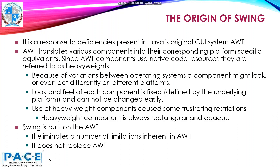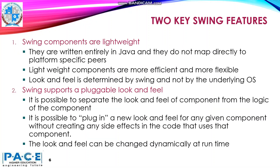These are the drawbacks of using AWT-based components. The look and feel of each component is fixed — it is defined by the underlying platform and cannot be changed easily. The use of heavyweight components caused some frustrating restrictions; for example, a heavyweight component is always rectangular and opaque. So, to solve this, Swing got originated. Swing is built on AWT, but it eliminates a number of limitations inherent in AWT, though it is not a replacement for AWT.